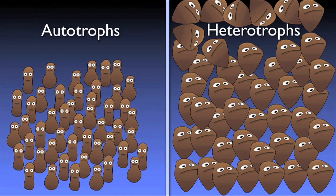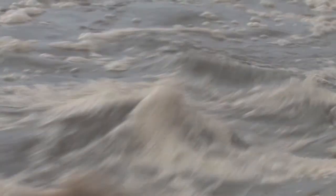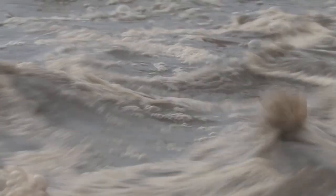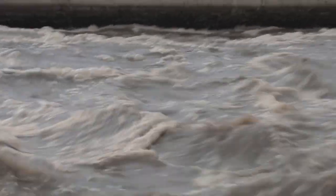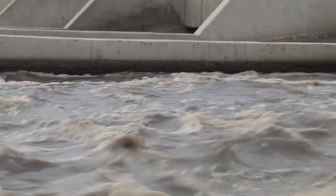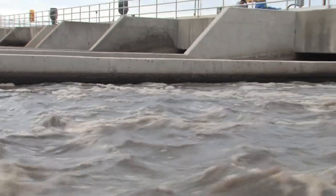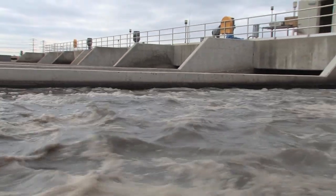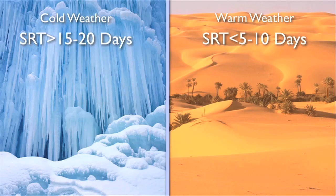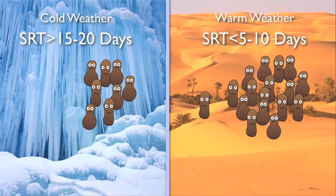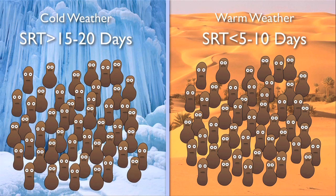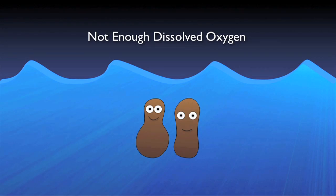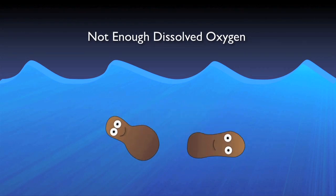The nitrifiers dictate the SRT in nitrogen-reducing plants. How fast nitrifiers grow depends on the temperature of the wastewater and the amount of dissolved oxygen present. If nitrifiers aren't allowed enough time to thrive, you run the risk of accidentally wasting them out of the system entirely and losing nitrification. Higher temperatures and DO concentrations mean faster growth; colder temperatures and lower DO concentrations mean slower growth. Also, when no DO is present, nitrifiers can become completely inactive.